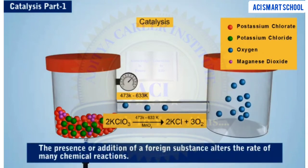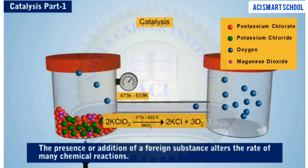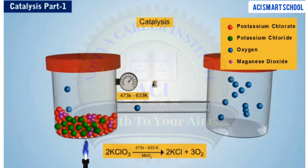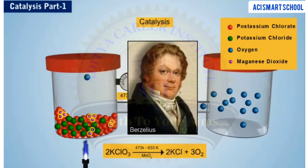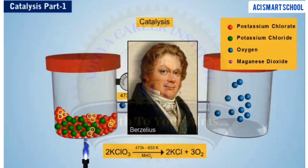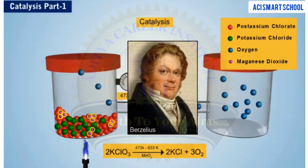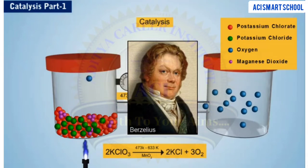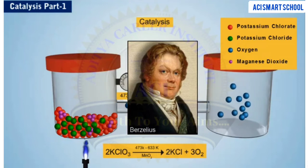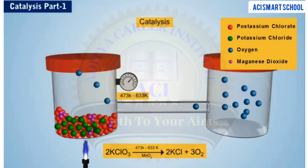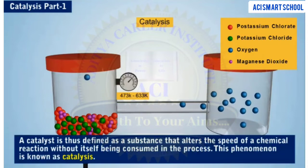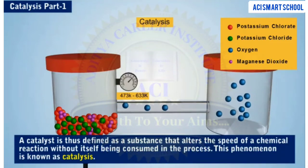The presence or addition of a foreign substance alters the rate of many chemical reactions. In 1835, Berzelius recognized these foreign substances as a new chemical force and called them catalysts. Thus, we can say that in the decomposition of potassium chlorate, manganese dioxide behaves as a catalyst. A catalyst is defined as a substance that alters the speed of a chemical reaction without itself being consumed in the process. This phenomenon is known as catalysis.